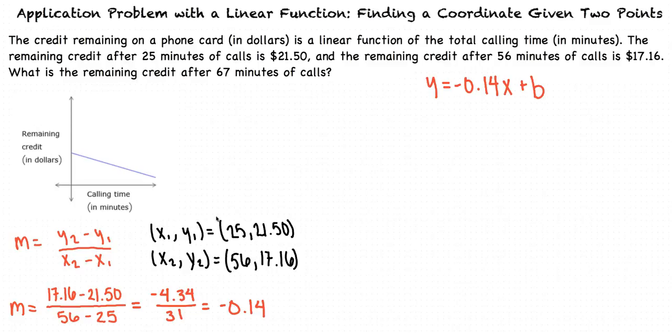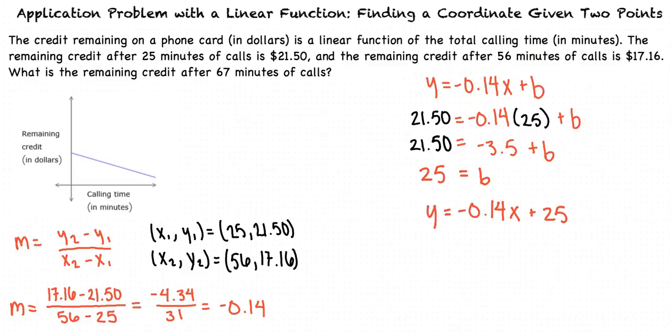We'll substitute 25 in for x and 21.50 in for y. When we simplify, we get b equals 25. Now we can write our complete equation of the line. Our equation of the line is defined as y equals negative 0.14x plus 25.